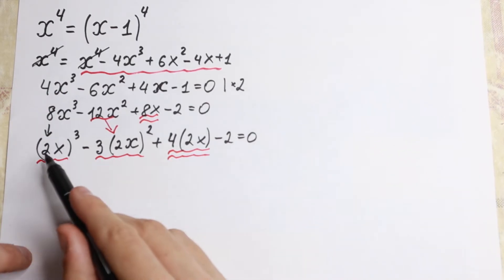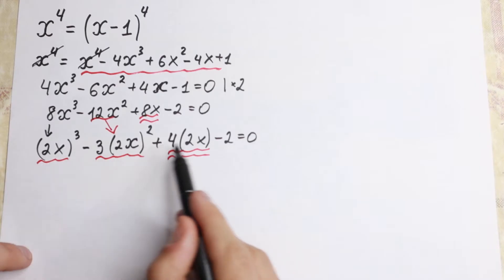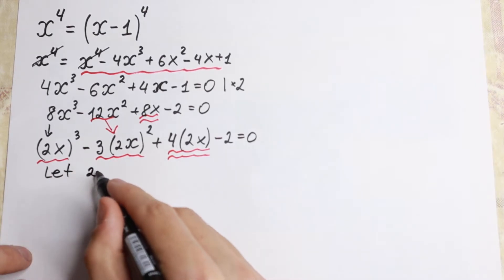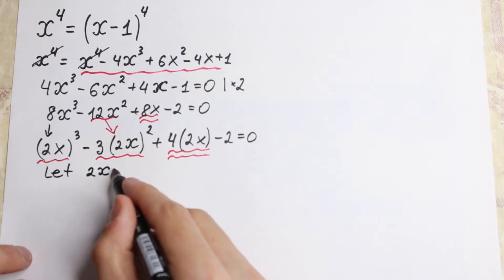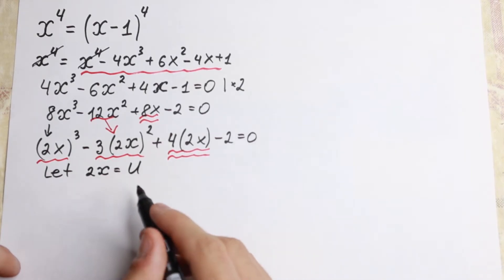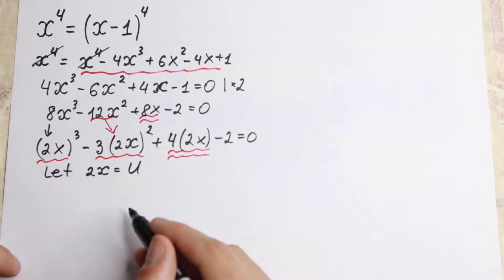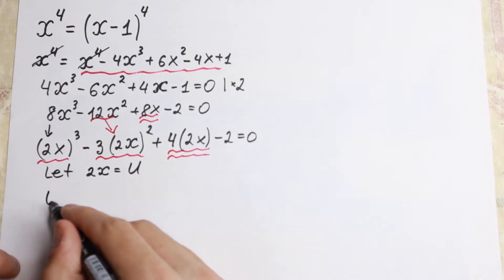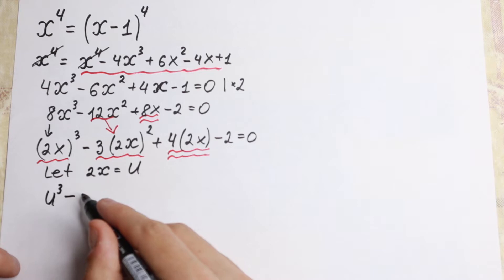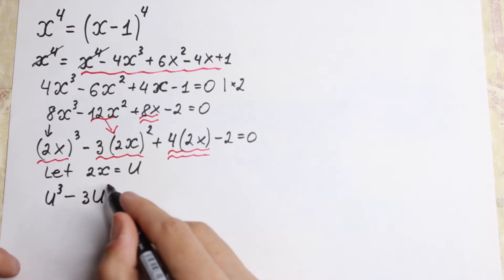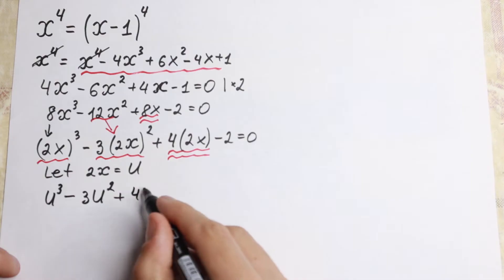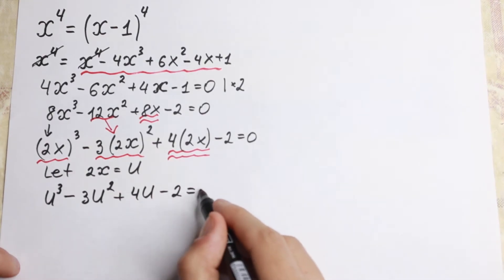As you can see, we have 2x appearing in all terms, so we can use a substitution. Let u equal 2x. Then our equation becomes u cubed minus 3u squared plus 4u minus 2 equal to 0.